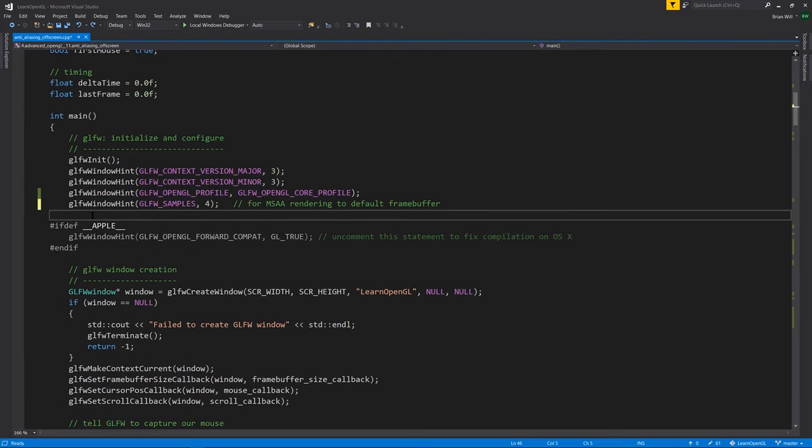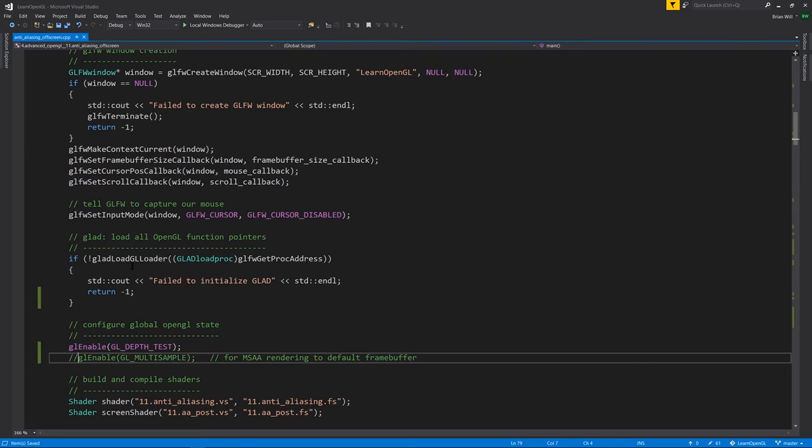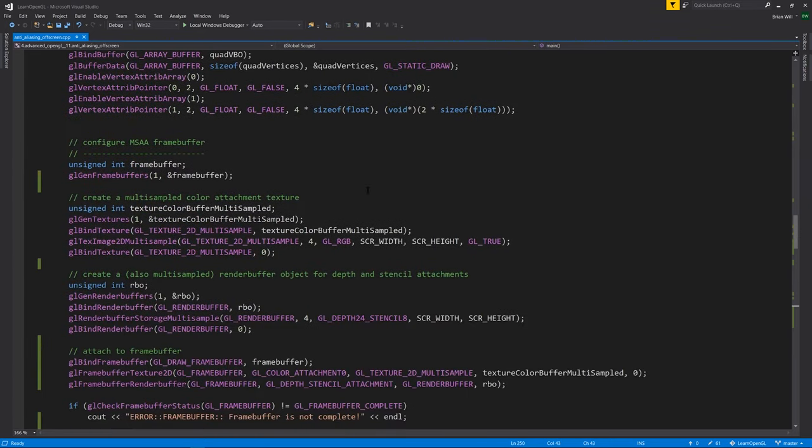But if for any reason we're rendering into an off-screen frame buffer rather than directly into the default frame buffer, then this solution isn't going to do us any good. We need the multi-sampling to be performed when we actually do the 3D rendering into the off-screen frame buffer. So disable this here. And now we will need to set up an off-screen frame buffer configured for 4x multi-sampling. So that's what we're doing here, creating a multi-sampled color attachment. Notice the type is 2D multi-sample and we're specifying the number of multi-samples for. Our depth and stencil buffers also need to be set up for multi-sampling. So note here, we're calling render buffer storage multi-sample. And again, specifying 4x multi-sampling.